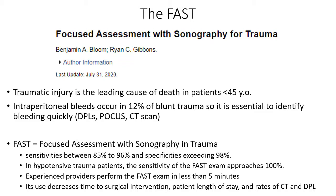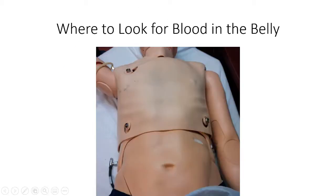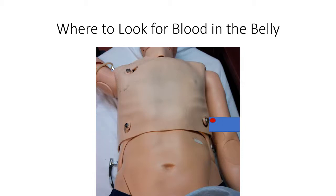Overall, doing an ultrasound in a trauma patient is a good idea - it's pretty accurate and fast. To start, you want to look in the right upper quadrant, because in a supine trauma patient lying on a backboard, fluid tends to accumulate there. Put the probe with the marker towards the patient's head and look for blood. You can then move to the left upper quadrant for a mirror view, and also look in the pelvis for any fluid.